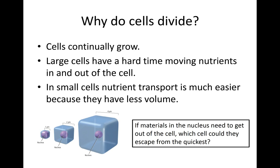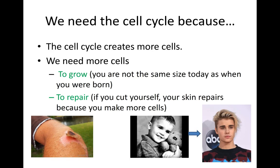If materials in the nucleus need to get out of the cell, the smallest cell will allow the quickest travel from nucleus to outside. So why do we need more cells? That's to grow and to repair. You are not the same size today as when you were born — you have a lot more cells now. We also need to repair our bodies: when you get a paper cut or fall and scrape your knee, you can repair that by creating more cells through the cell cycle, growing new skin underneath.